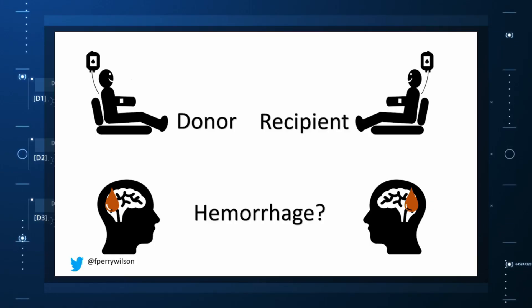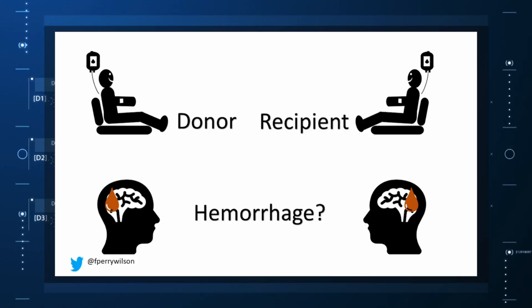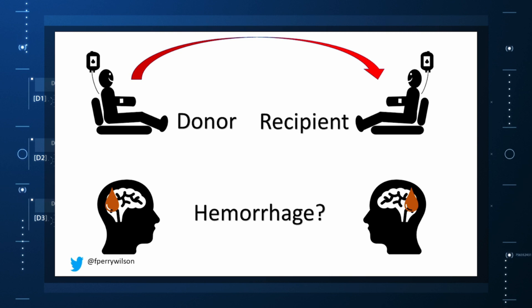But those studies are more or less case series. The new JAMA paper gives us, if not a smoking gun, a pretty decent set of fingerprints. Here's the idea: if CAA is caused by some infectious agent, it may be transmitted in the blood.